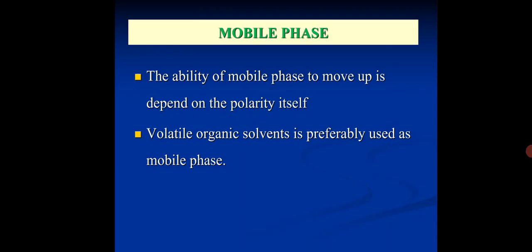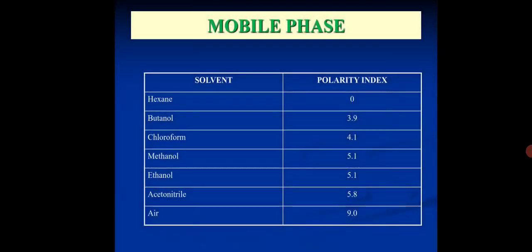Now we discuss mobile phase. The ability of mobile phase to move up depends on the polarity itself. Volatile organic solvent is preferably used as mobile phase. Solvent and polarity index: hexane polarity index zero, butanol 3.9, chloroform 4.1, methanol 5.1, ethanol 5.1, acetonitrile 5.8, and water 9.0. That is the polarity index of the solvents.